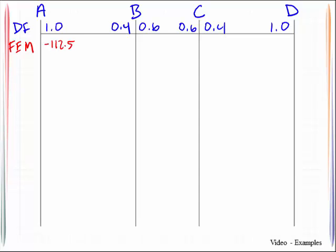112.5. Negative 133.3. 133.3 positive. Negative 300. And a positive 300. Okay, that gets your table set up.